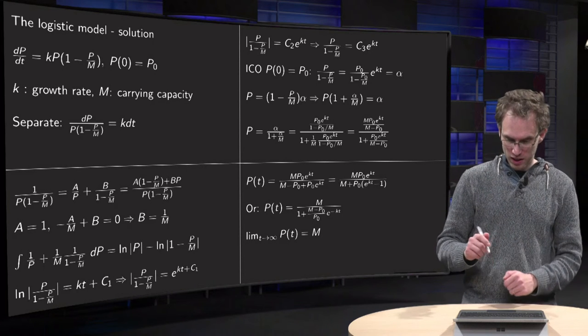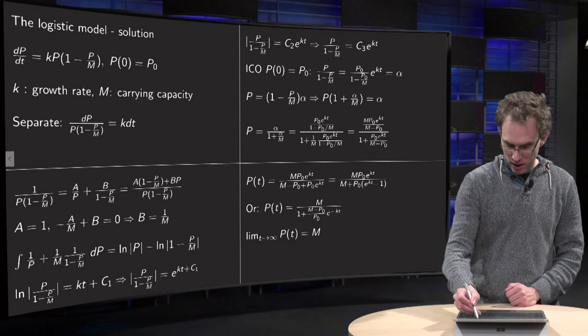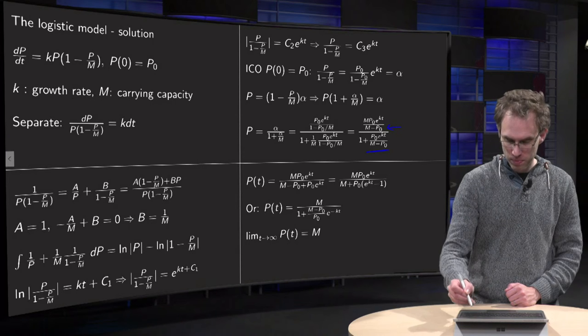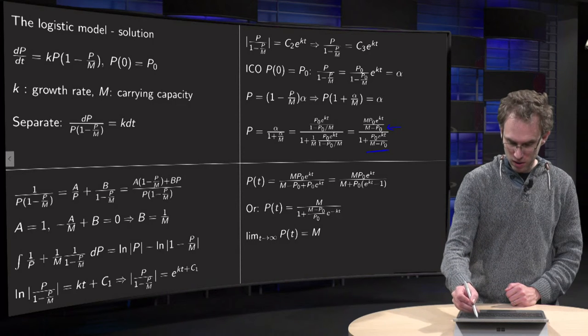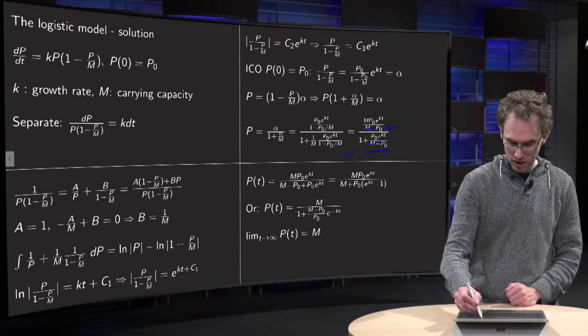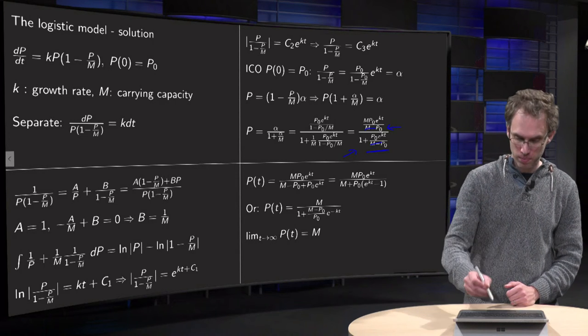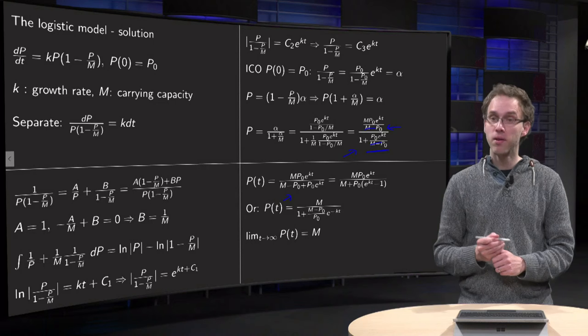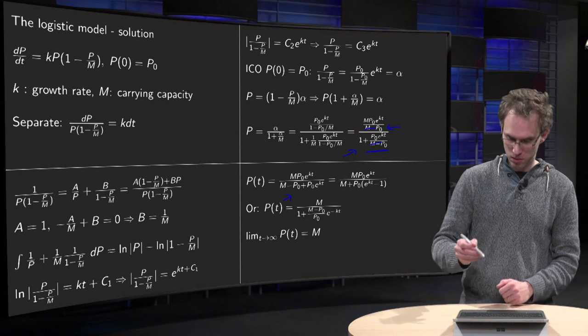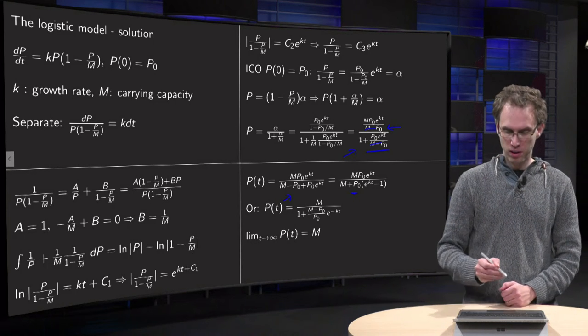And then in the next step, multiply by (M minus P0), so that means that they are cancelled out here and there, and you get the (M minus P0) over there, as we have over here. And what you often do is that you then take out the P0.